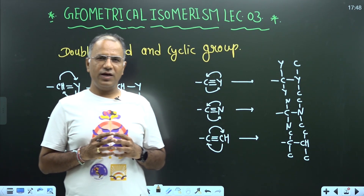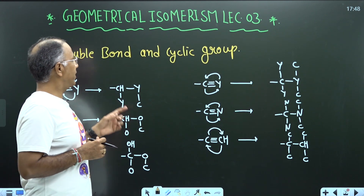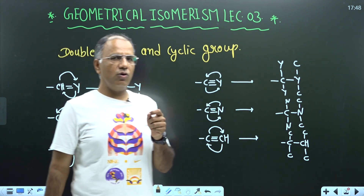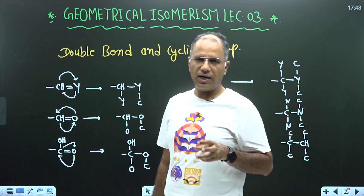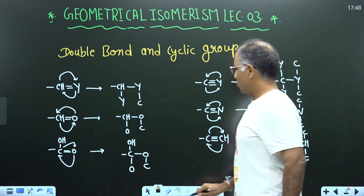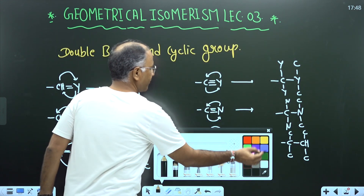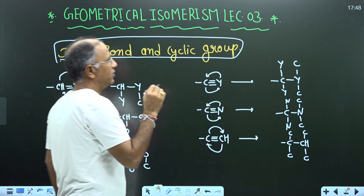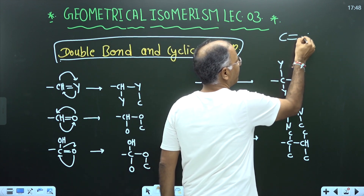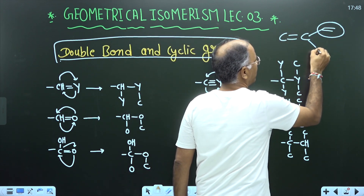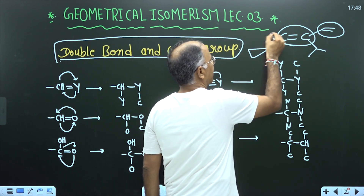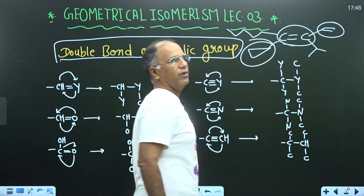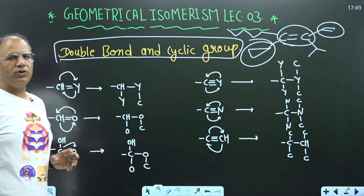Hello everyone. Today we are going to study how to give priority to double-bonded compounds in geometrical isomerism, or how to give priority to double-bonded groups in EZ nomenclature. This is our third lecture on geometrical isomerism. Today we will focus on how to give priority to double-bonded and cyclic groups.